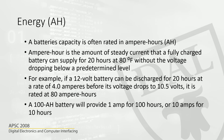Without the voltage dropping below a predetermined level — that is the official definition for ampere hours. As an example, car batteries are typically 12 volts, often lead-acid batteries. A 12 volt battery can be discharged for 20 hours at a rate of 4 amperes before the voltage drops to 10.5 volts — that is the predetermined level. So ampere hours equals 4 amperes times 20 hours, which is 80 ampere hours.